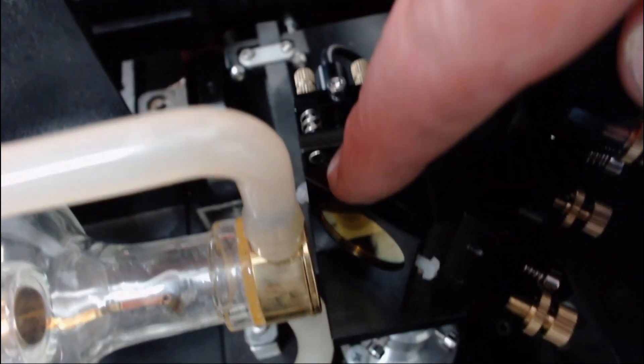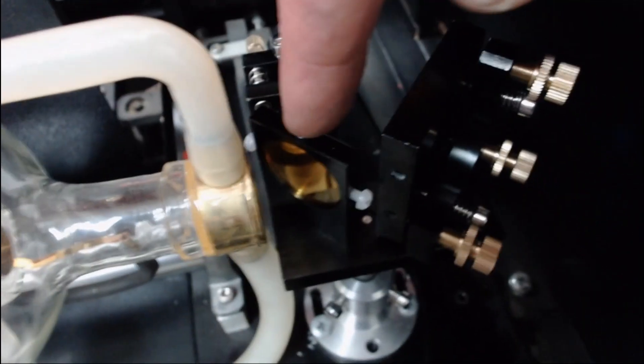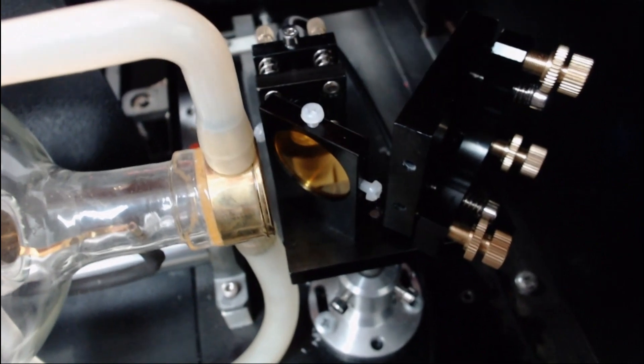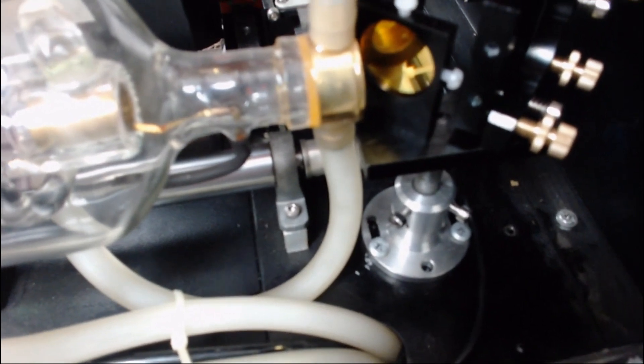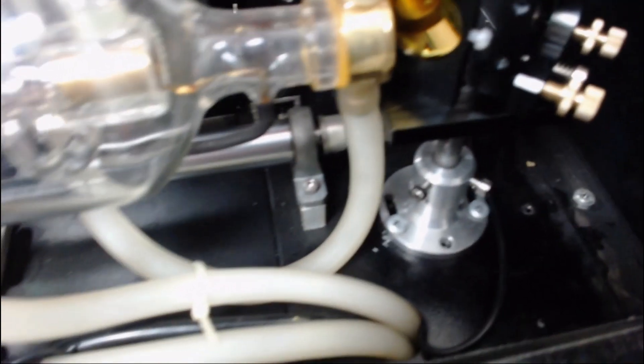We have the red dot pointer at the back here, pointing through to here. Combiner lens bounces across and then back again. The laser beam will fire through here, straight through onto this mirror and then down to the back.